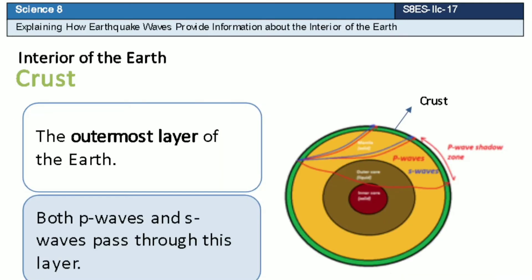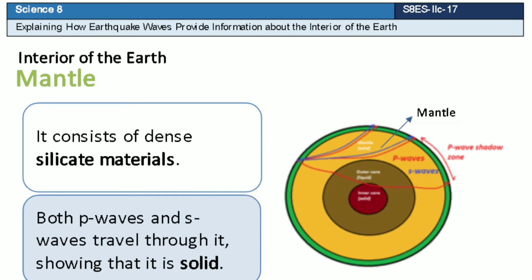The interior of the Earth is composed of three layers. The crust is the outermost layer of the Earth, and both P waves and S waves pass through this layer. The mantle consists of dense silicate materials, and both P waves and S waves travel through it, showing that it is solid.